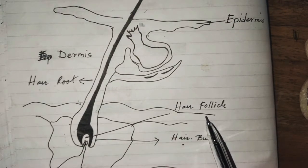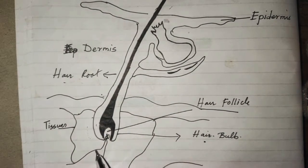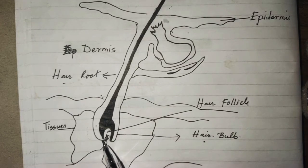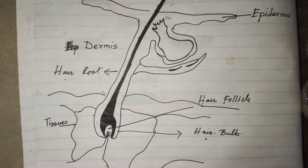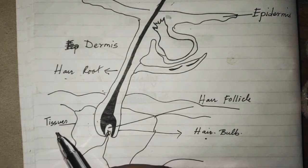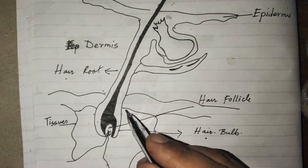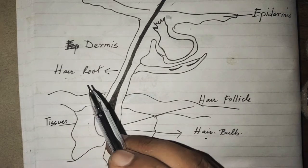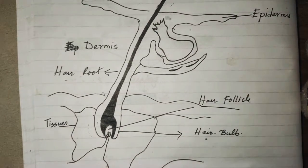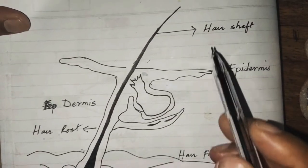The base of the hair follicle has a small aggregation of dermal tissue. Because of the presence of this dermal tissue, the hair is richly filled with blood vessels, which also provides nourishment to the hair.